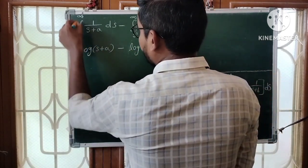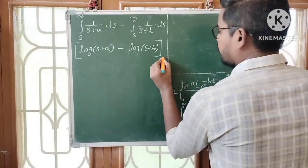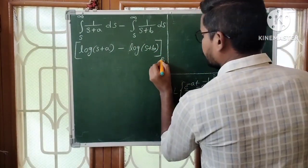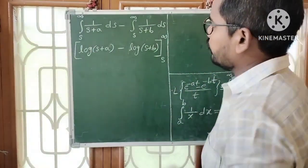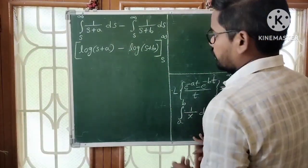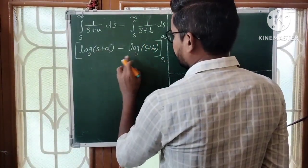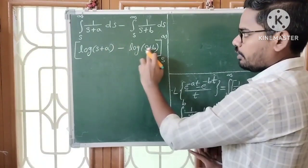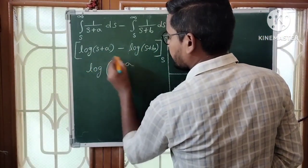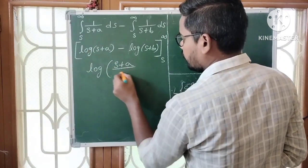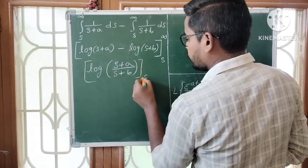This is like log(a) - log(b) = log(a/b). With a value = s+a and b value = s+b, we get log[(s+a)/(s+b)] with limits s to infinity. Now apply upper limit minus lower limit.